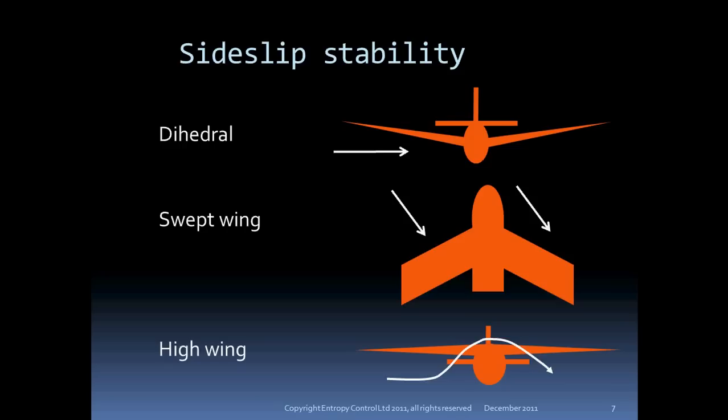Stability in sideslip has more than one component. Typically, sideslip stability is provided by dihedral. A sideslip creates an airflow that causes the upwind wing to be at a higher incidence than the downwind wing, rolling the aircraft out of the slip. Similarly, a swept-wing aircraft has the upwind leading edge more at right angles to the flow than the downwind wing, also providing a correcting rolling moment. For a high-wing aircraft, the fuselage interference in a sideslip provides locally higher incidence on the upwind wing, rolling the aircraft.